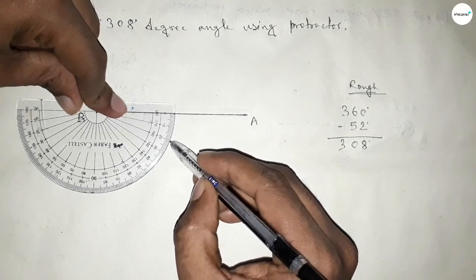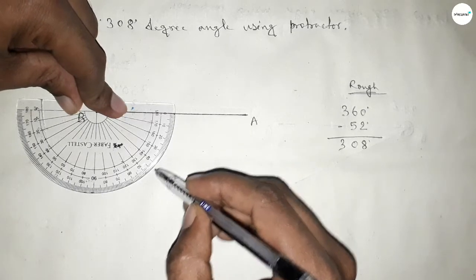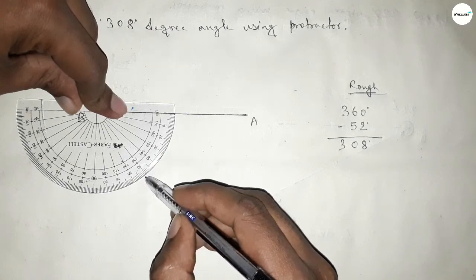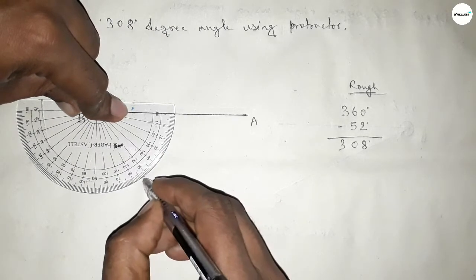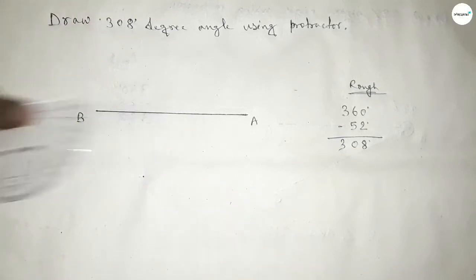Now counting 52 degrees. So this is 10, 20, 30, 40, and this is 50, 51, 52. So if we subtract 52 degree angle from 360 degrees, then we can get 308 degree angle.